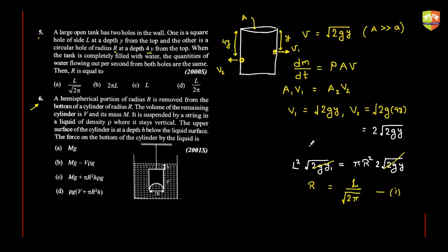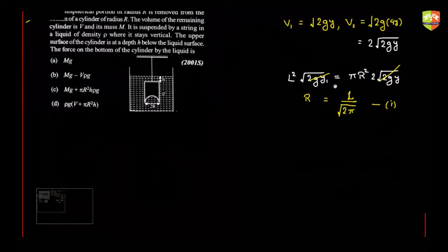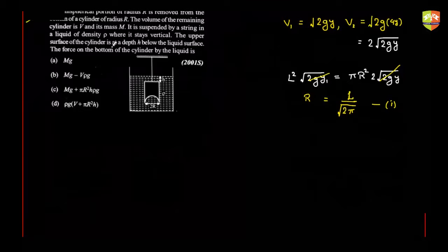Let me do question six now. There is a hemispherical portion of radius r removed from the bottom of a cylinder of radius r. The volume of the remaining cylinder is V and the mass is m. It is suspended by a string in a liquid of density ρ; it stays vertical and the upper surface is at a depth h. The force on the bottom of the cylinder by the liquid is what?